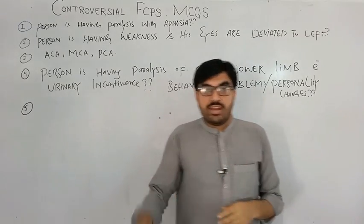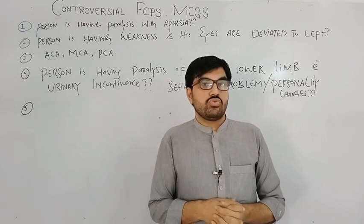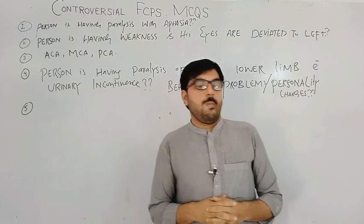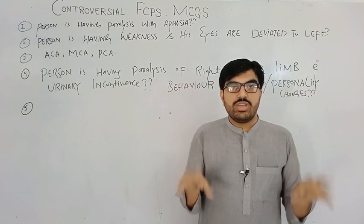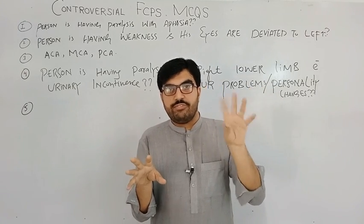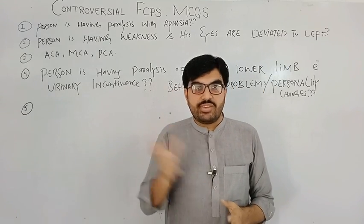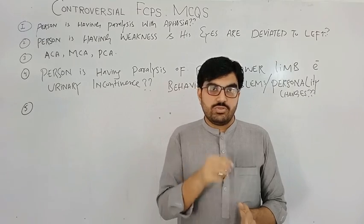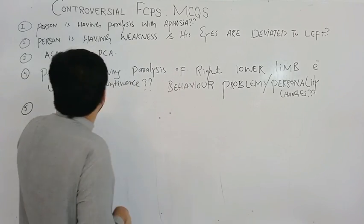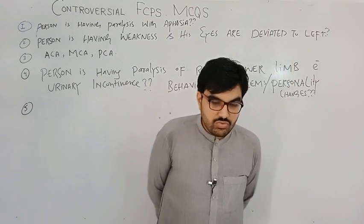To summarize: a patient with behavior problems, lower limb paralysis, and urinary incontinence has ACA stroke. A useful mnemonic: 'I cannot kick you, so I pee on you.' For MCA stroke, weakness with aphasia points to the left side — the side with the language center. But if the question states the dominant hemisphere is the right side, then the answer changes to right side.